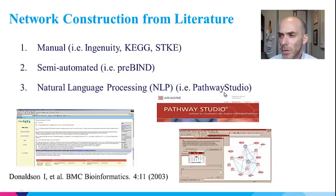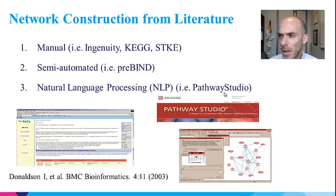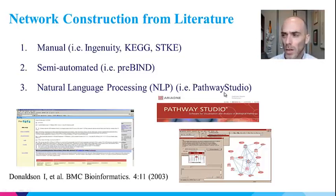However, there are other ways to build networks from the literature. I'm showing two examples of semi-automatic extraction from publications, where software identifies abstracts that potentially contain interactions, and then a user validates and extracts interactions manually, assisted by software that highlights protein names and potential interaction types. There are also completely automated methods using natural language processing.